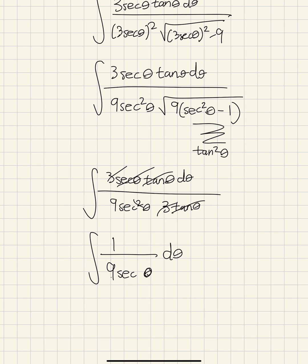We can factor it out to 1 ninth outside. So we're just left with 1 over 9 secant theta.